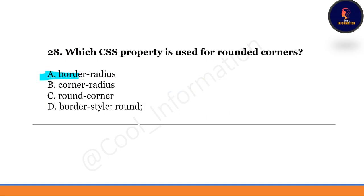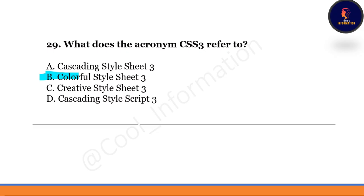Next question: which CSS property is used for rounded corners? Options include border-radius, corner-radius, round-corner, and border-style round. The correct option is option A — border-radius.